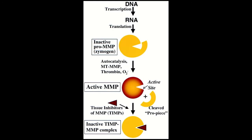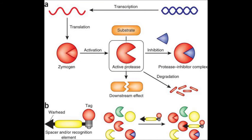A zymogen, also called a proenzyme, is an inactive precursor of an enzyme. A zymogen requires a biochemical change, such as a hydrolysis reaction revealing the active site, or changing the configuration to reveal the active site, for it to become an active enzyme.